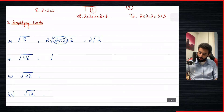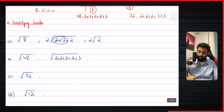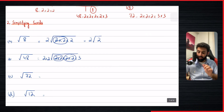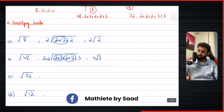Let's try the same with 48. So 48 can be written as two times two times two times two times three. Now let's see how many pairs we can make here — we can make a pair of two, so we'll bring that outside. We can make another pair of two, so we'll bring that outside also. Since there was already a two outside, when we bring another two outside, it gets multiplied — so two times two is four. And four under root three is what it becomes.